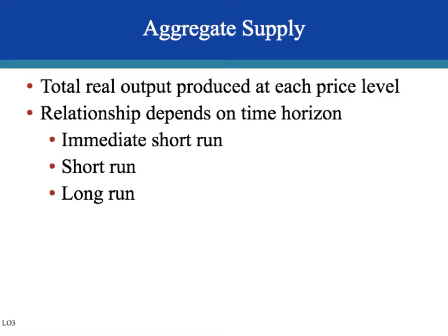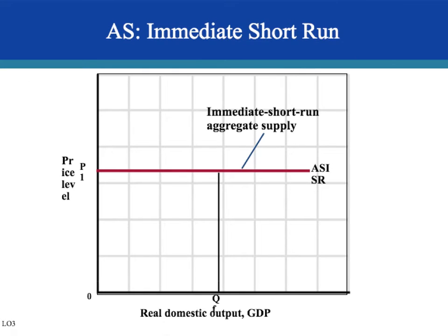Now let's move on to aggregate supply — the total output produced by firms at each price level. The relationship between price level and output depends on the time horizon. We'll look at the immediate short run, the short run, and the long run. In the immediate short run, aggregate supply is horizontal, meaning prices are very inflexible. The condition for the immediate short run is that both input prices and output prices are fixed.